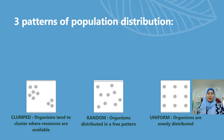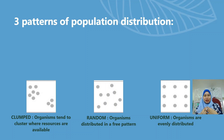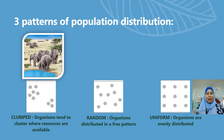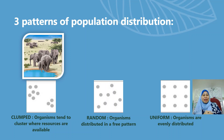Now we look at the three patterns of population distribution. Population distribution patterns can be divided into three types: clump, random, and uniform. The first one is clump. In the clump pattern of population distribution, organisms tend to cluster where resources are available. Look at the picture — you can see elephants gathering in a place where they can find water. You can see in the diagram how the organisms cluster together — this is called the clump pattern of population distribution.